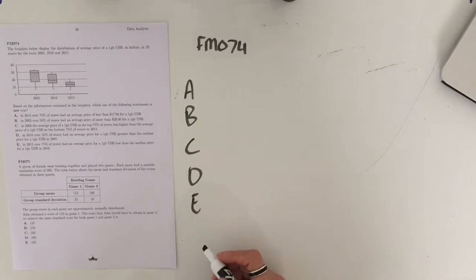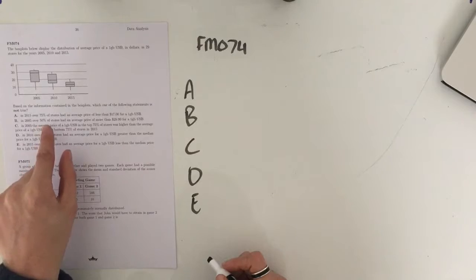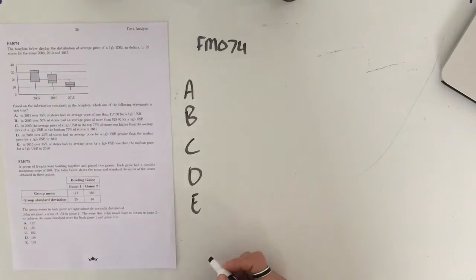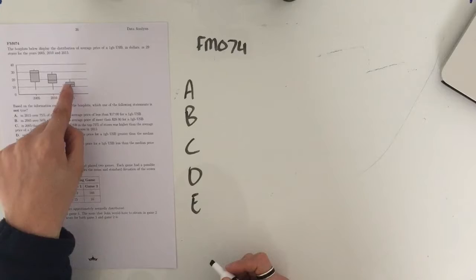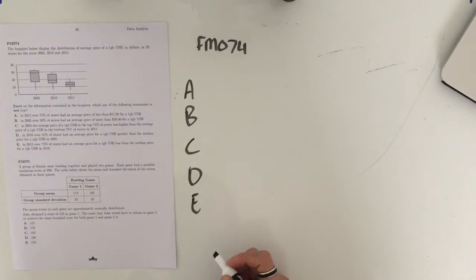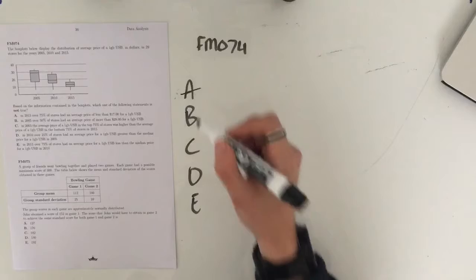In 2015, over 75% of stores had an average price of less than $17 for a 1GB USB. Now, over 75% of stores had an average price of less than $17. So $17 is probably going to be closer towards that $20 there. It would appear that 75% of data falls below $15, which means that yes, over 75% does have an average price of less than $17. This statement is true and hence isn't the one that we're looking for.